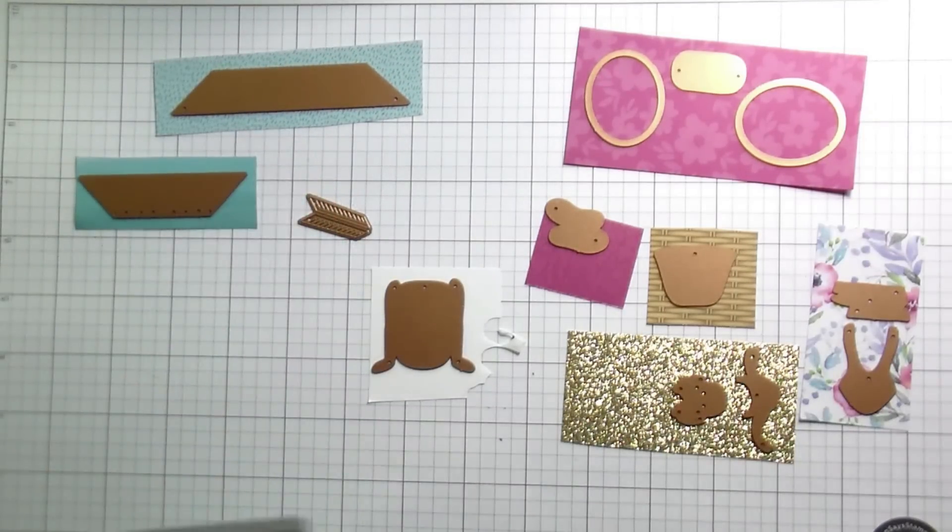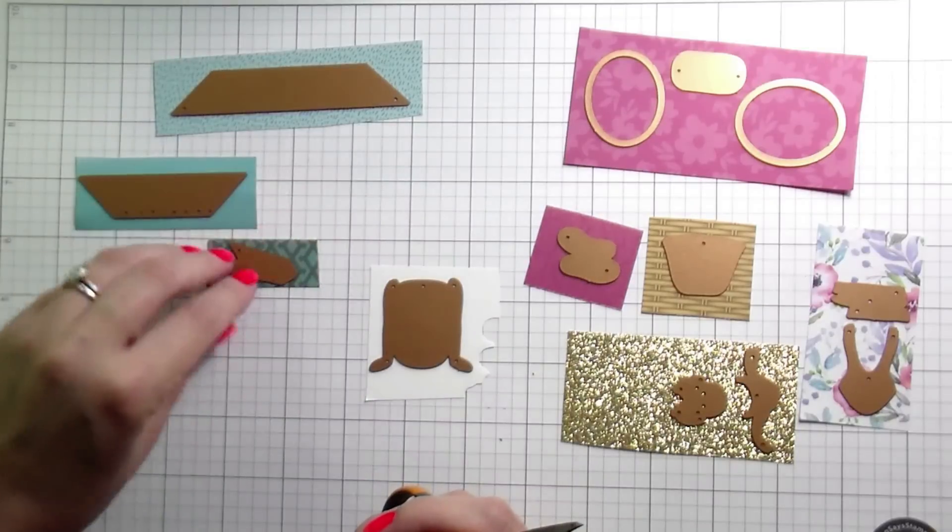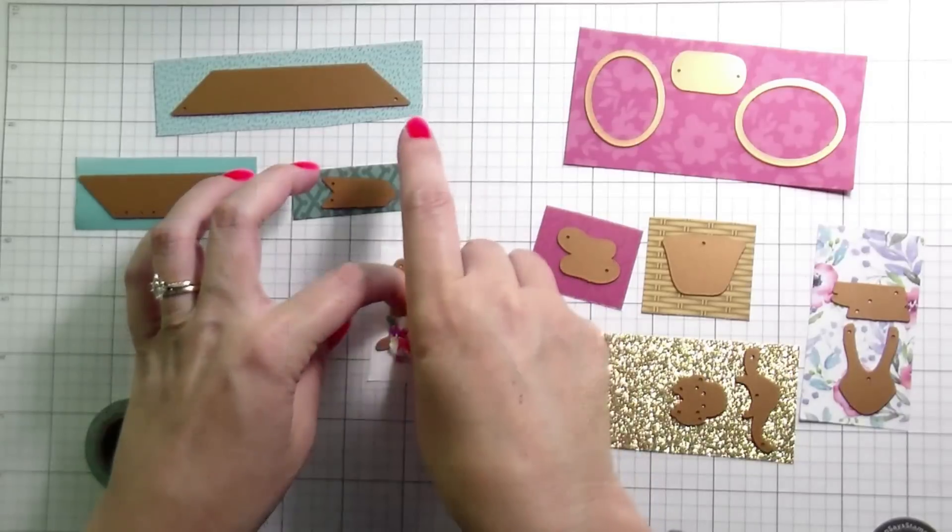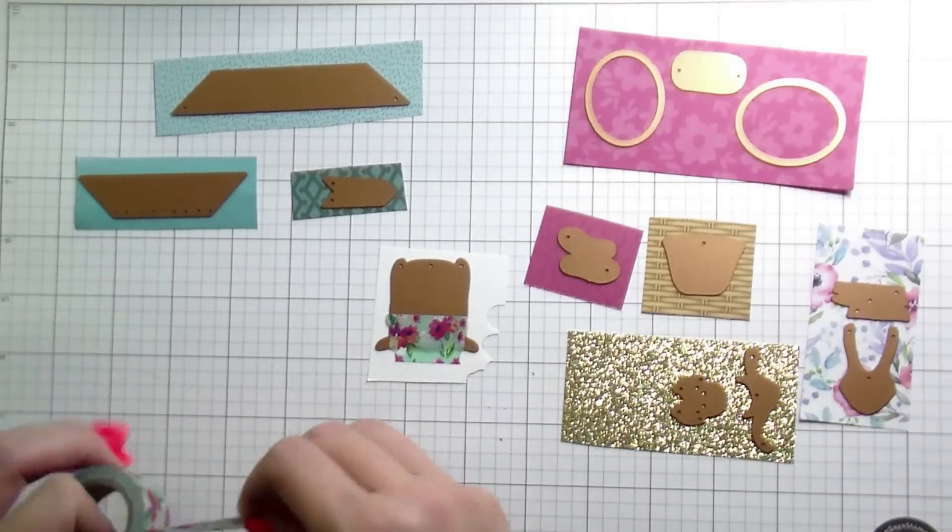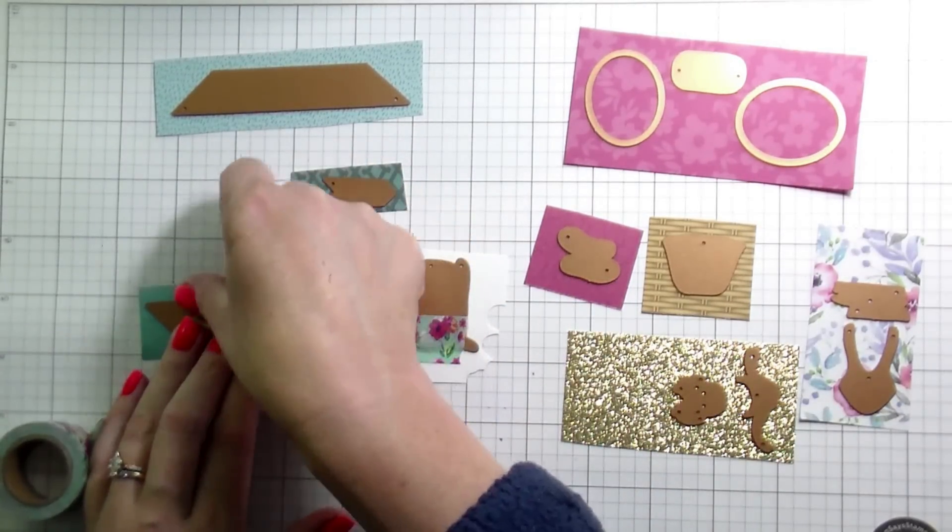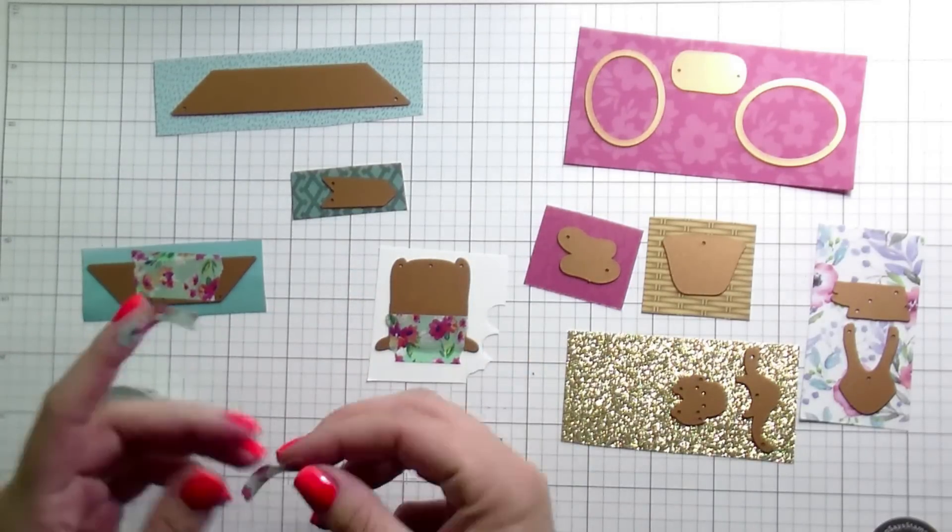For the little fringes on the edge, I just chose another darker teal out of that same pad that matches. For my little body, you can see I'm cutting it out of white. And that's because I fully intend to Copic color it. I did not have a cardstock that matched. And doing a little bit of Copic coloring allows me to add a little bit of shading to kind of step my scene up a notch.